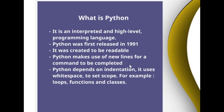Python makes use of new lines for a command to be completed. If we compare this to other programming languages, they would usually use something like a semicolon or parentheses. Another really important point is that Python depends on indentation — it uses white spaces to set scope, for example for your loops, functions, and classes. Other programming languages would probably use something like a curly bracket for this task.